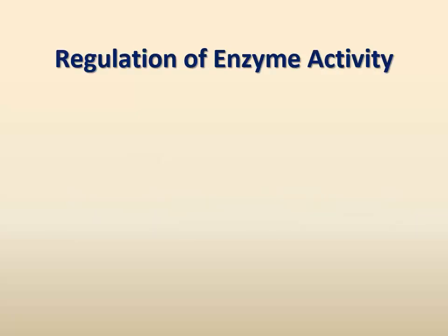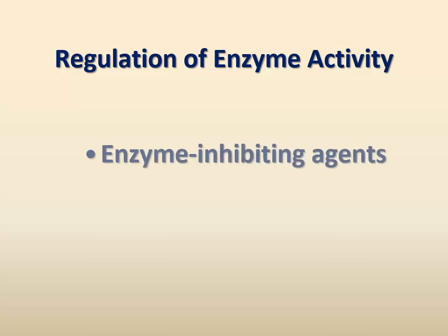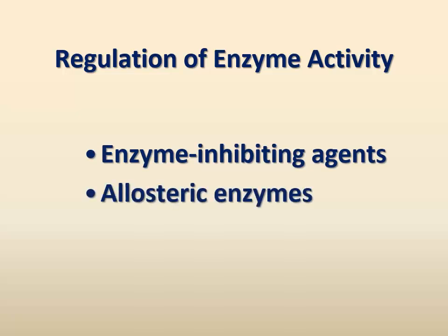One important way by which cells regulate metabolic pathways is by regulating the activity of enzymes. Enzyme activity is regulated by various means, which can be divided under two main categories: enzyme-inhibiting agents and allosteric enzymes.